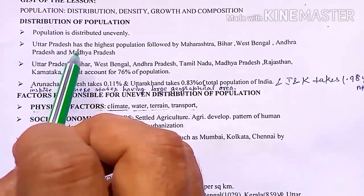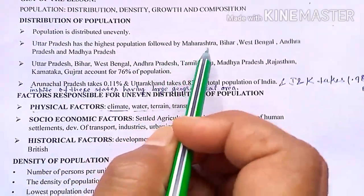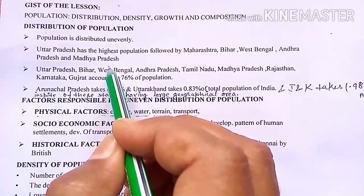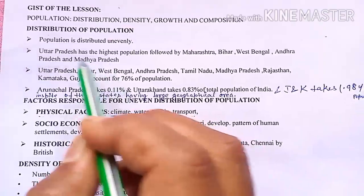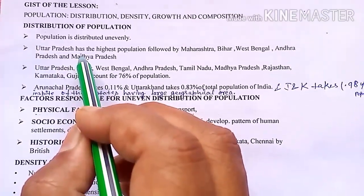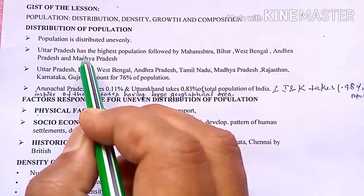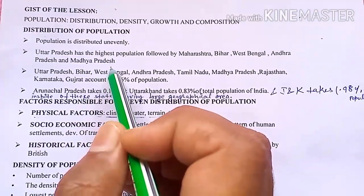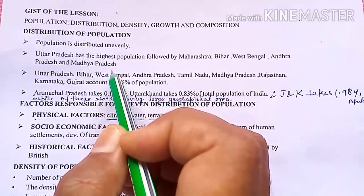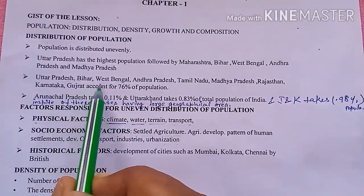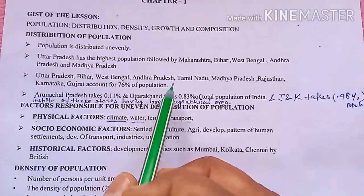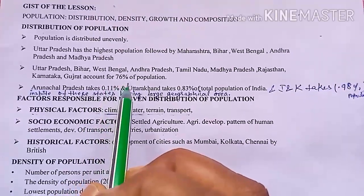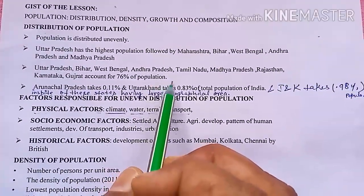Uttar Pradesh has the highest population, followed by Maharashtra, Bihar, West Bengal, Andhra Pradesh, and Madhya Pradesh. Uttar Pradesh alone has about 19 crore persons. Maharashtra, Bihar, West Bengal, Andhra Pradesh with Tamil Nadu, Madhya Pradesh, Rajasthan, Karnataka, and Gujarat together account for 76% of the total population of India.